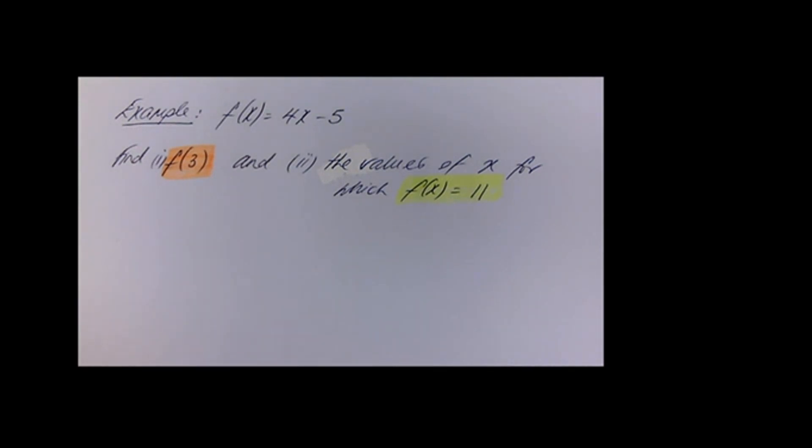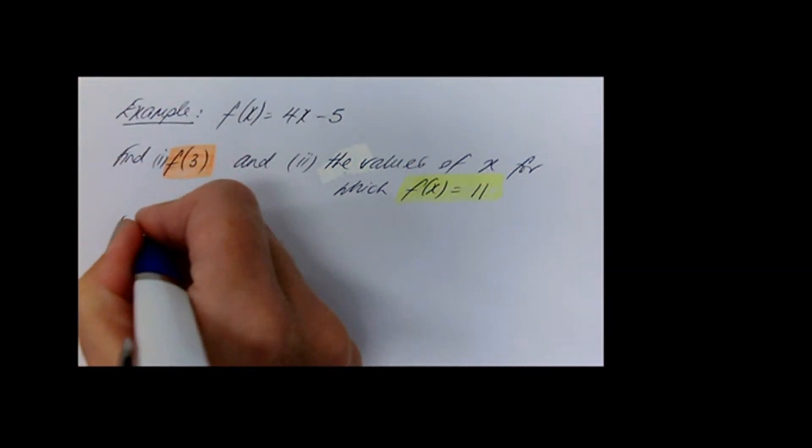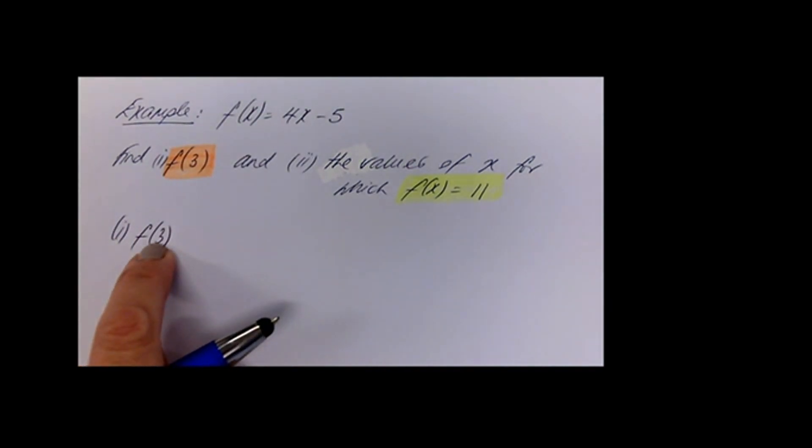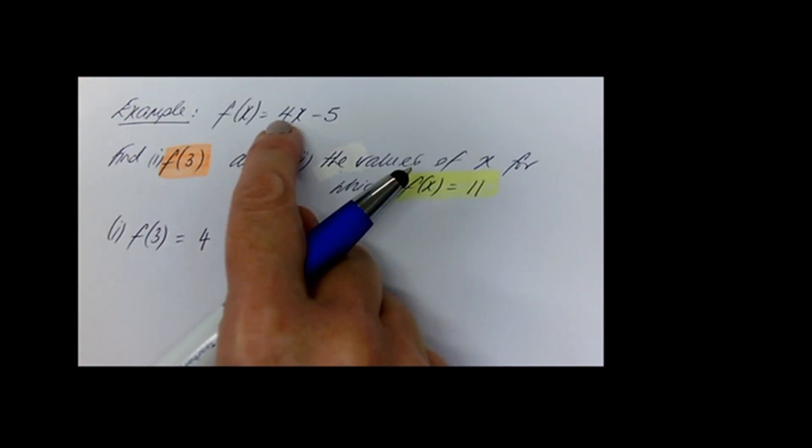Let's take the first one. Whenever you have a number replacing the x, that's exactly what you're going to do in the function. Instead of 4x minus 5, we're going to substitute 3 for the x — keep brackets around it — so we get 4 times (3) minus 5. That gives 12 minus 5, so f of 3 is equal to 7.